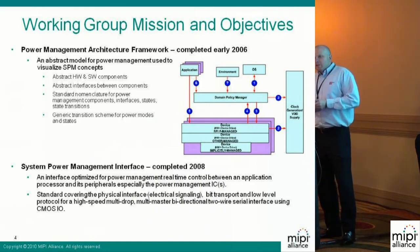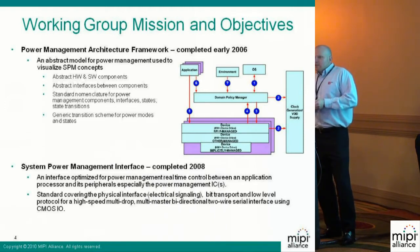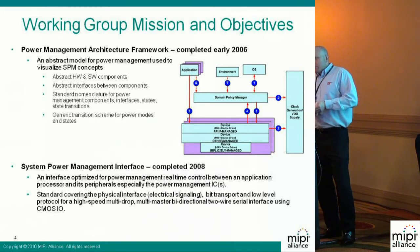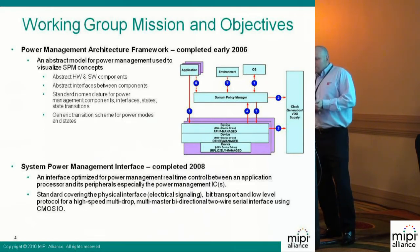The other big deliverable for the group was the SPMI specification, which was completed in 2008. This is the actual interface specification, and it covers the physical interface, the signaling, the bit transport, and the lower layer protocols. Like RFP, it's a two-wire serial bus and it uses CMOS IO.